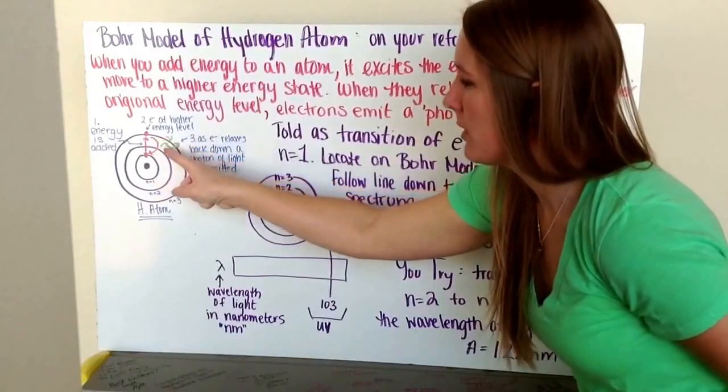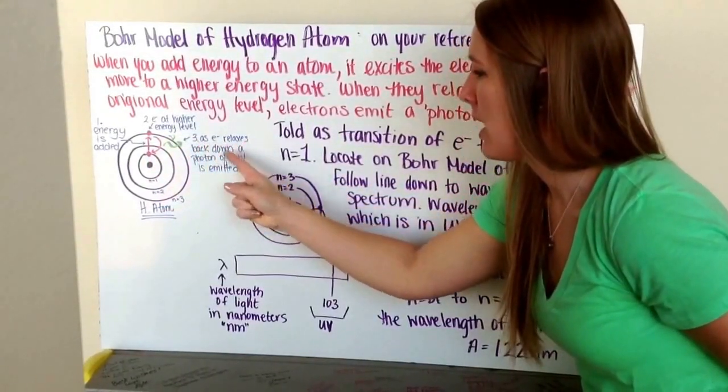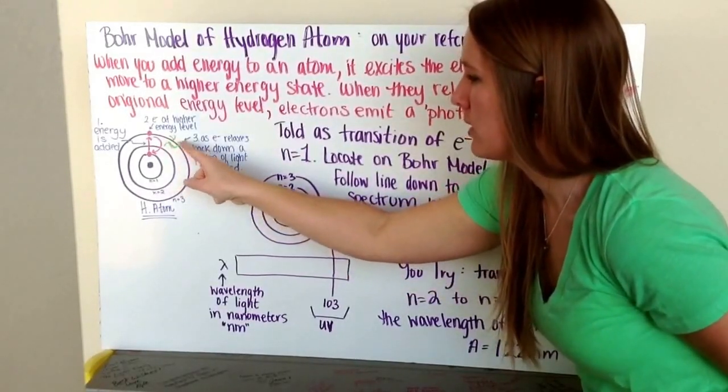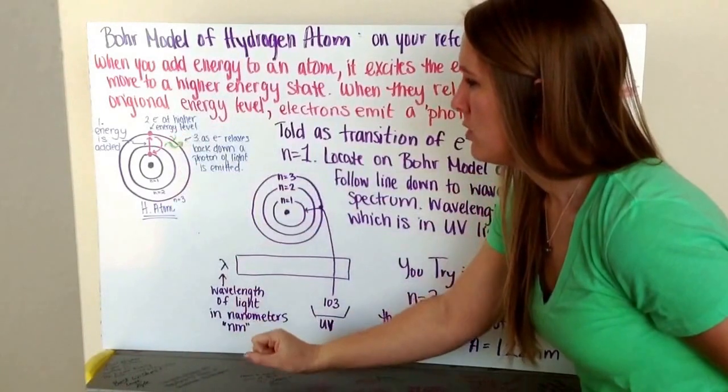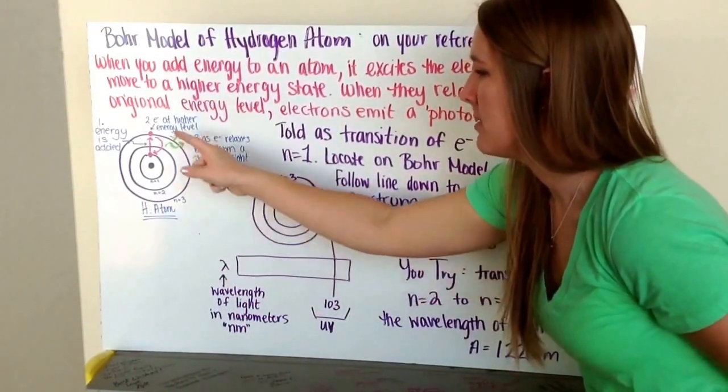And then it's going to start to relax back down to its original energy level. As my electron relaxes back down, a photon of light, illustrated here by the squiggly arrow with a little nu sign above it, is going to be emitted, so my photon of light is emitted.